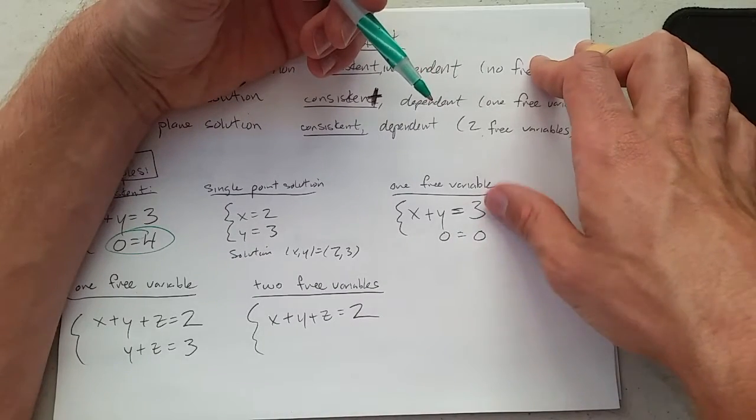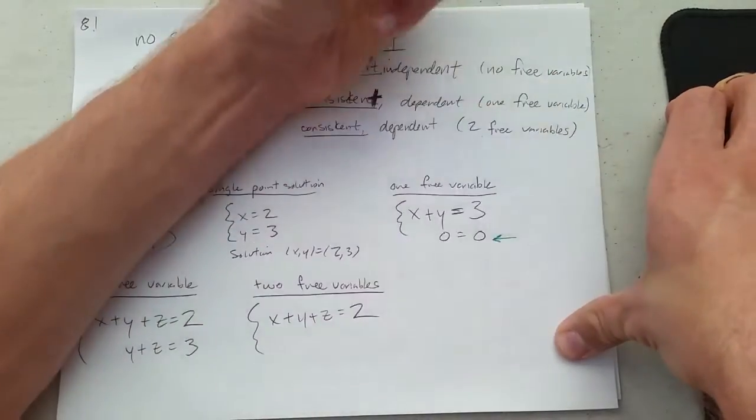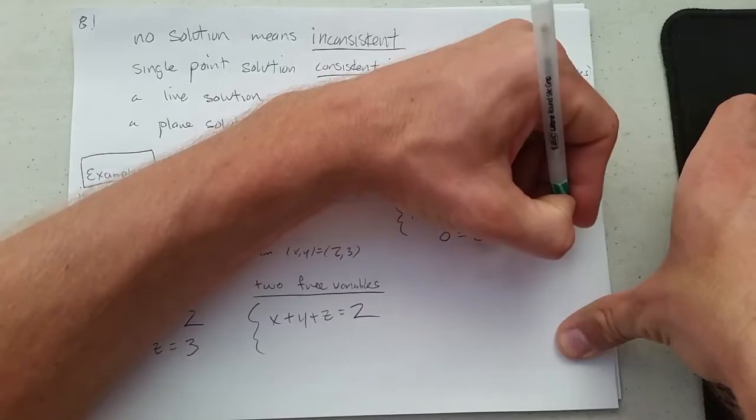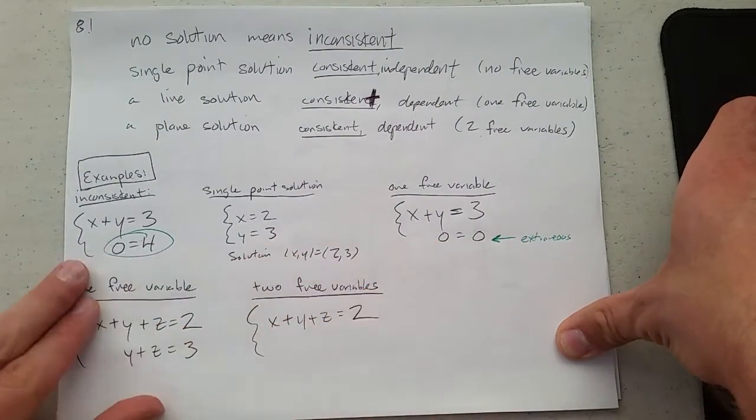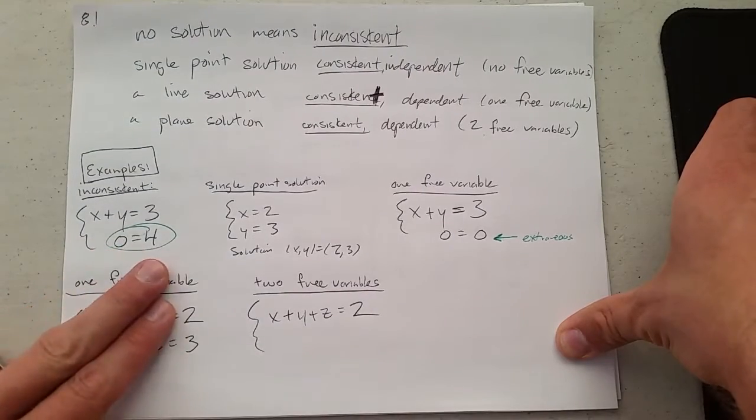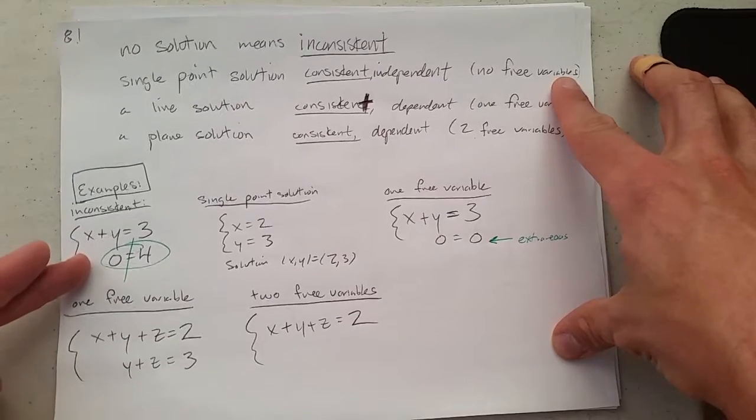So this second equation is not relevant. It gives us no additional information on solving this system, so you could think of this as extraneous. How does this differ from inconsistent? Inconsistent was not 0 equals 0. Inconsistent was 0 equals 4, which obviously is not true. So that's what made the first one inconsistent.